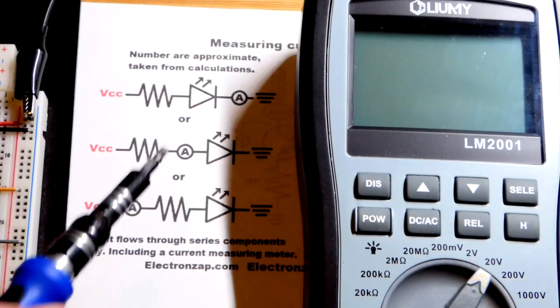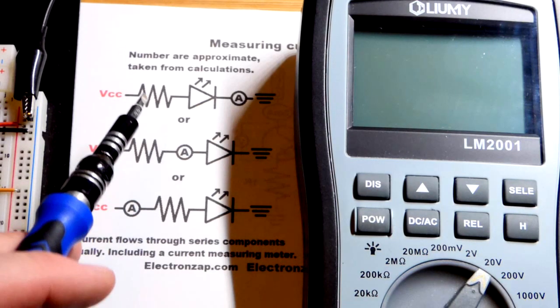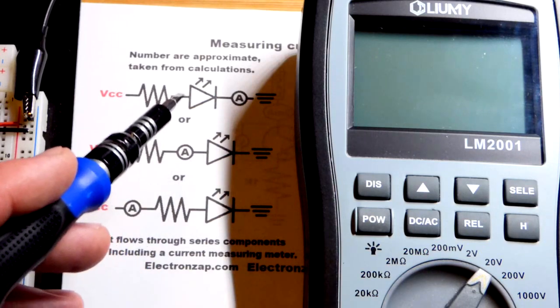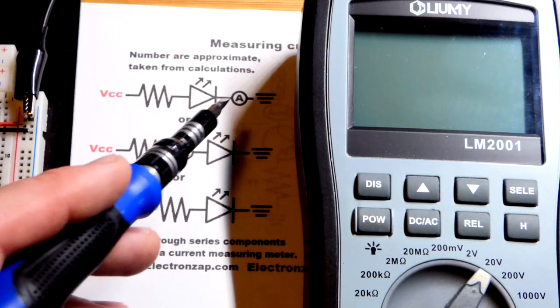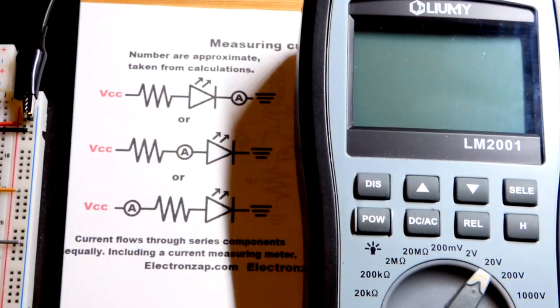So now in this video we're going to go over measuring current of electrical circuits and we're just going to look at a resistor and an LED for the most part. So one thing to note is that first off we're going to have to put the meter in series with the components to take that measurement.